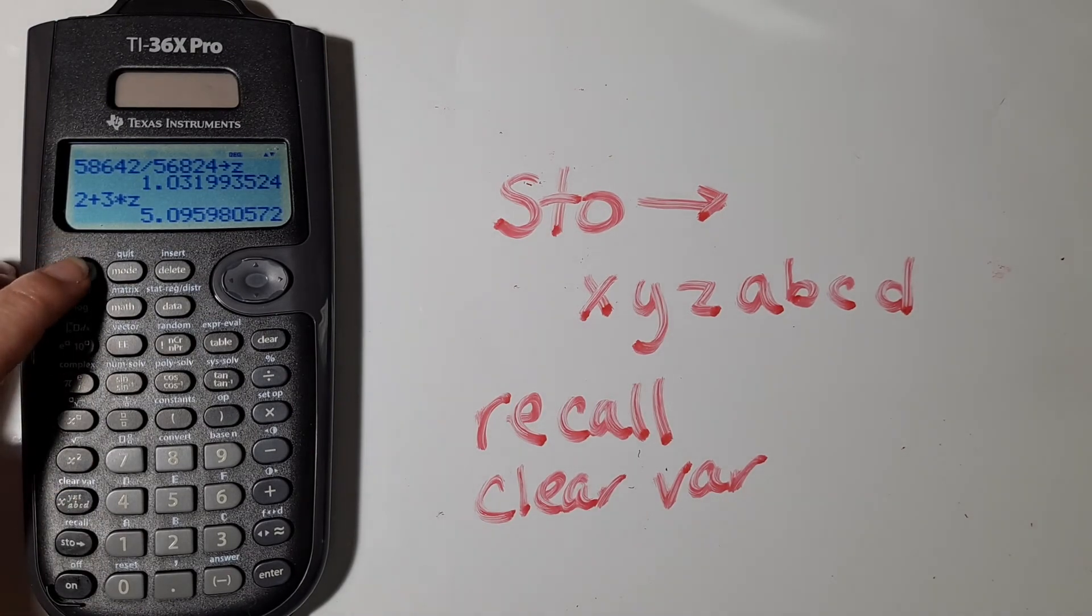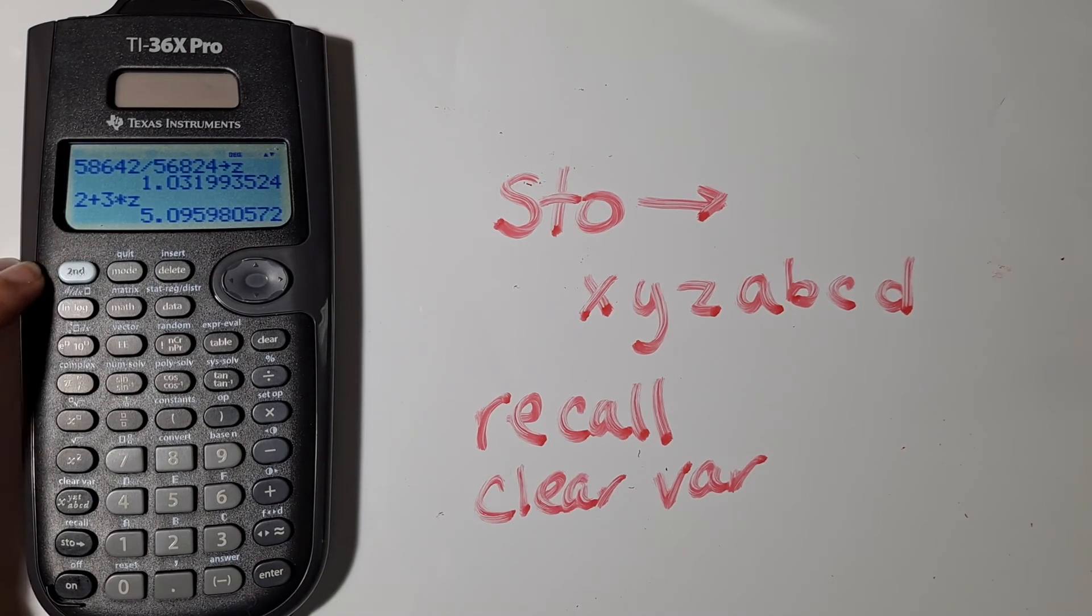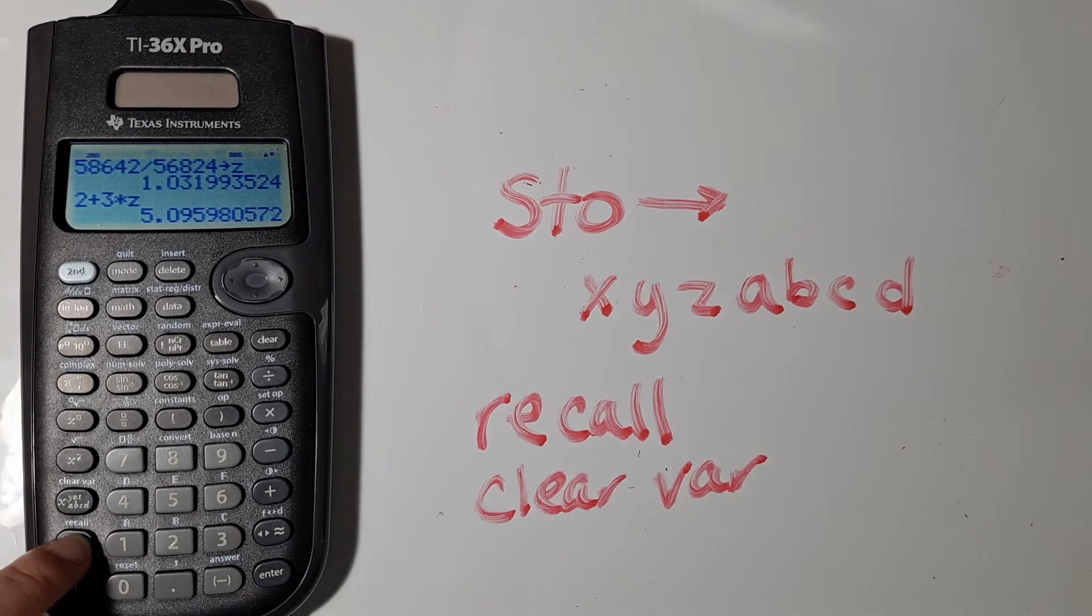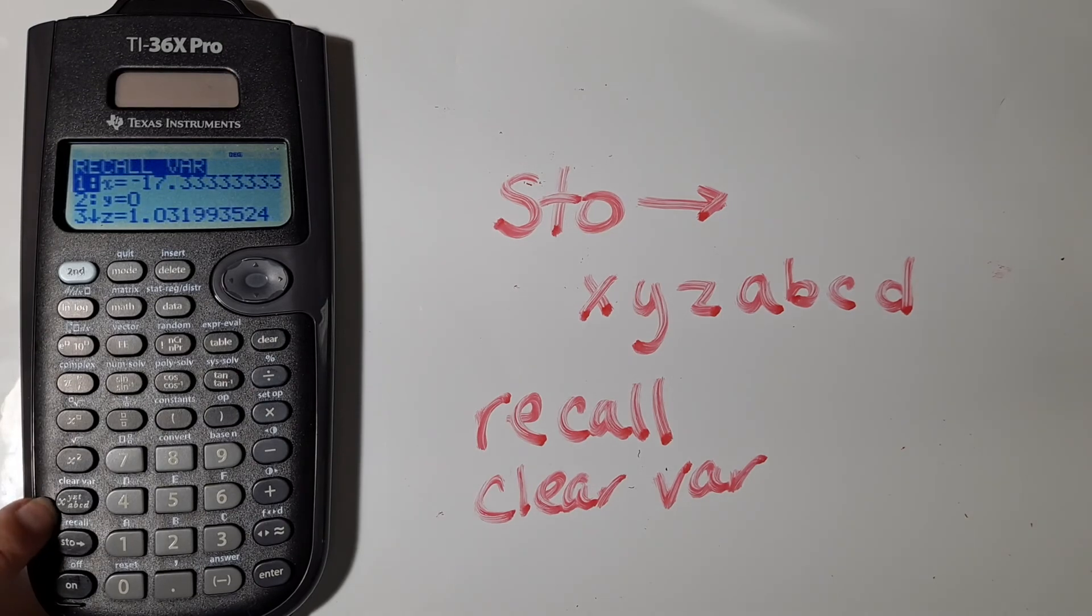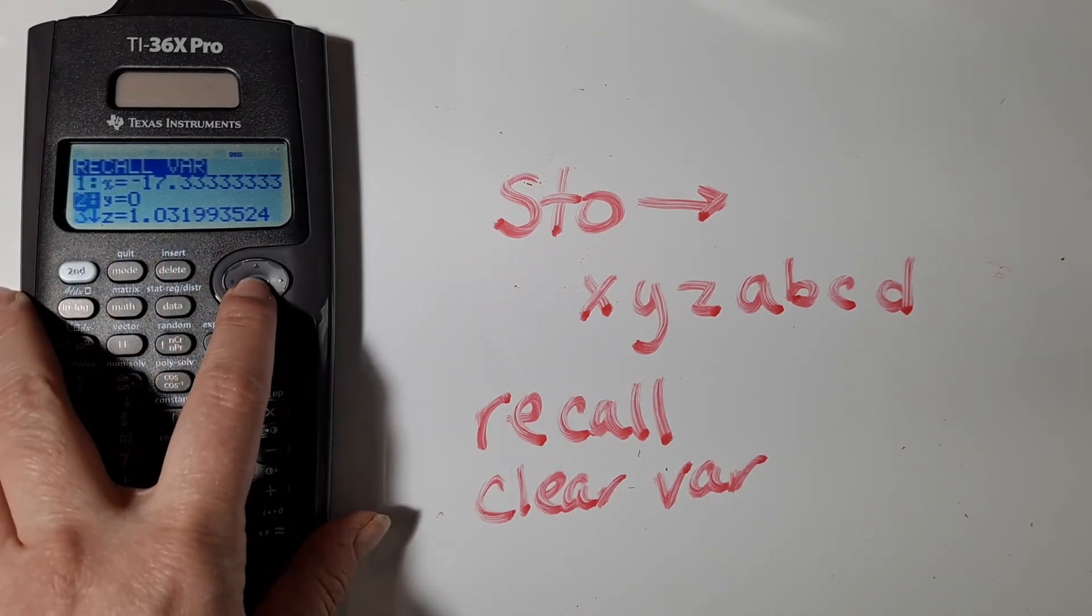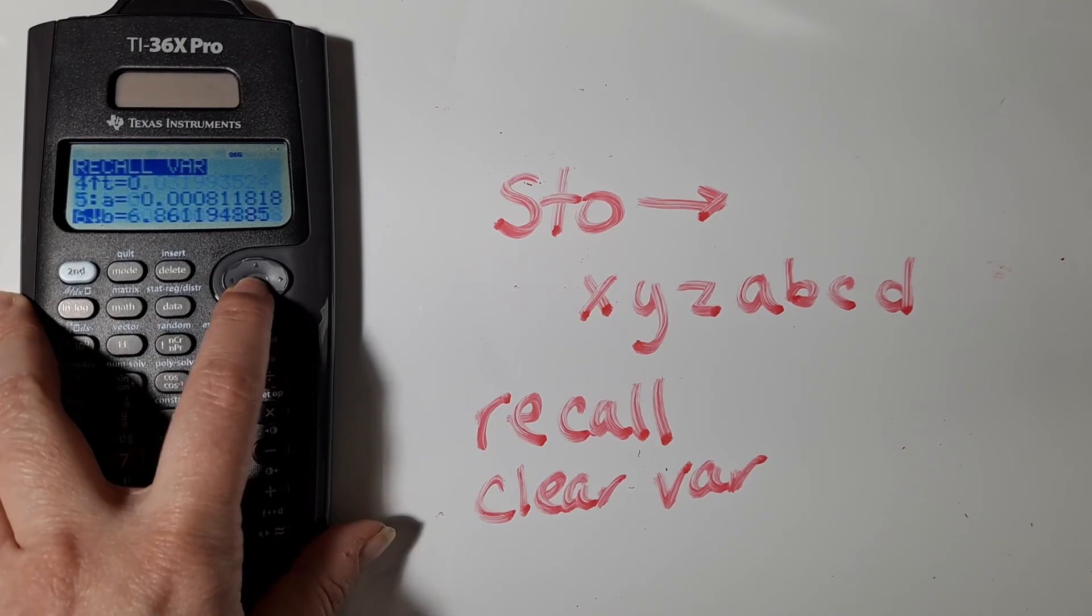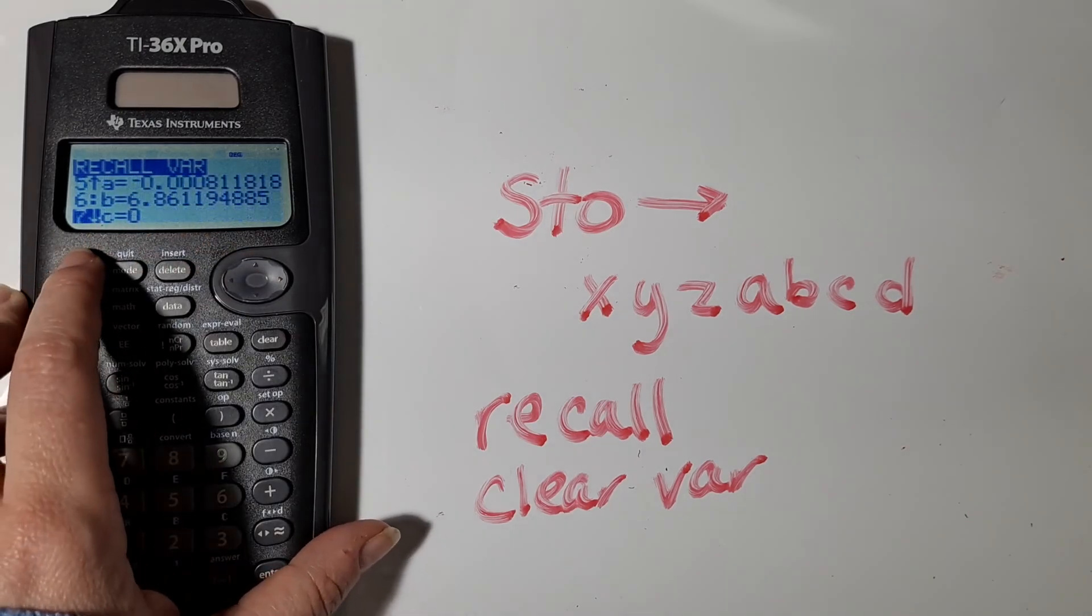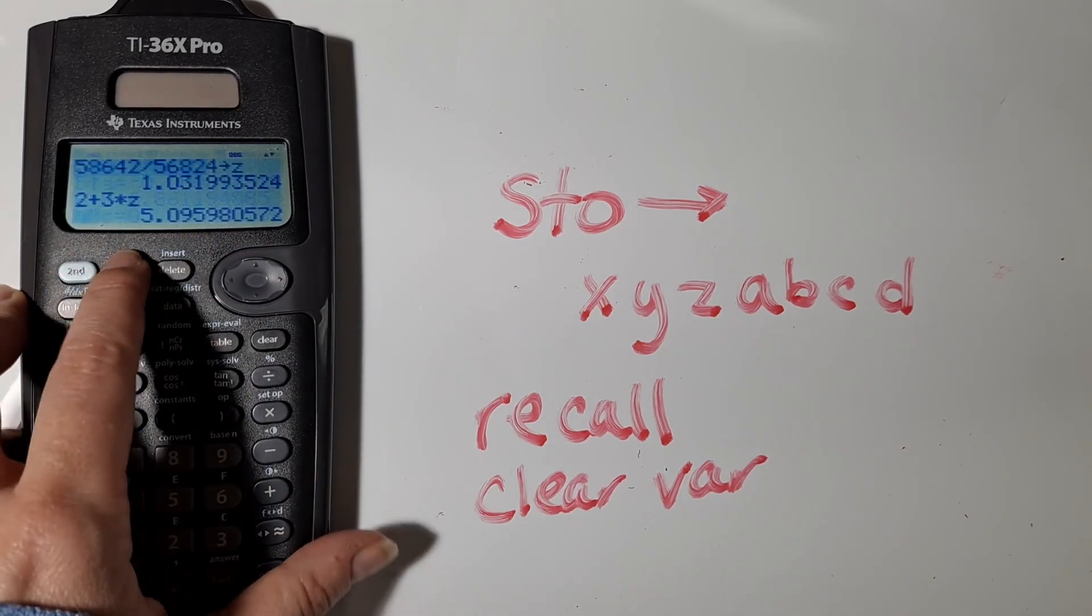You can also, if you're not sure which number you stored in which letter, you can go second and then the store button and that brings up the recall menu and you can view the list of all the numbers that you have stored in your calculator. And then you can go second quit.